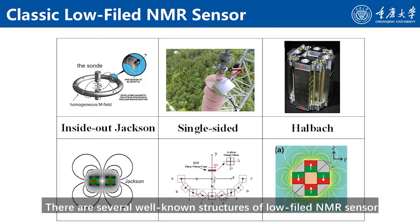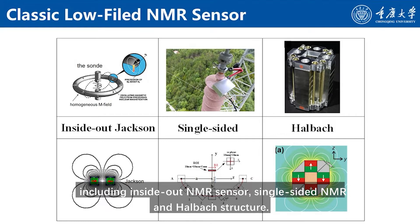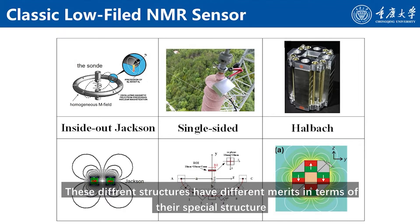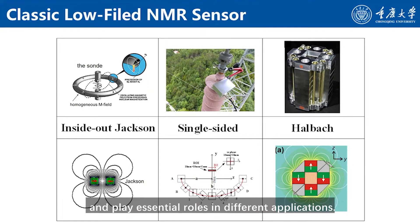There are several well-known structures of low-field NMR sensor, including inside-out NMR sensor, single-sided NMR, and Halbach structure. These different structures have different merits in terms of their spatial structure and play essential roles in different applications.